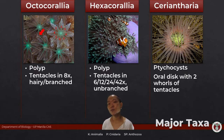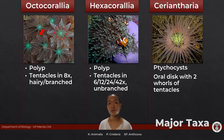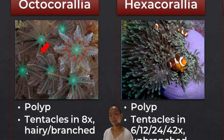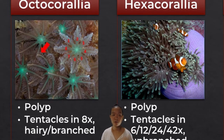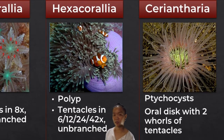There are three main groups under subphylum Anthozoa: classes Octocoralia, Hexacoralia, and Ceriantharia. The main way to differentiate them is by the appearance of the polyp, particularly the tentacles. Octocoralia have tentacles in multiples of eight, and each tentacle has smaller branches. Hexacoralia have tentacles in multiples of six with no branches. Ceriantharia are the tube anemones, and they have modified nematocysts called ptychocysts that secrete material to form a tube around the body stalk.